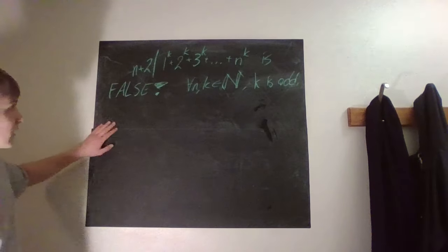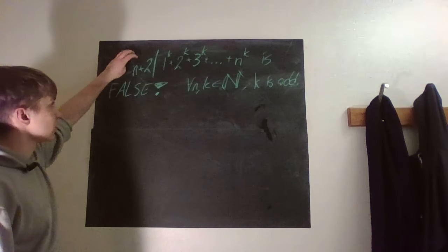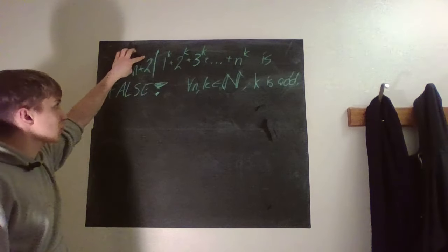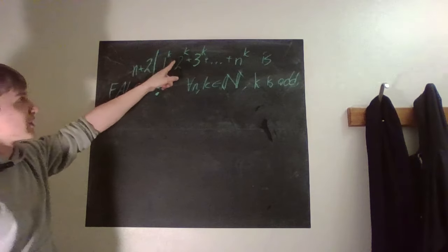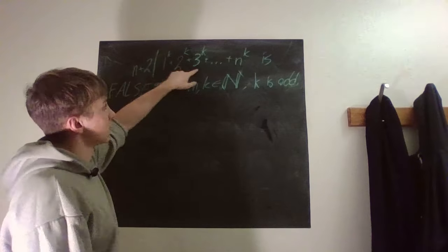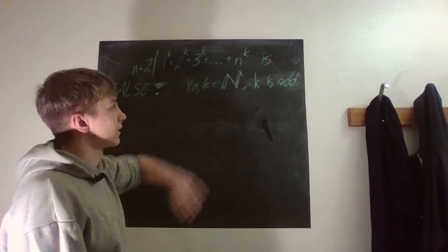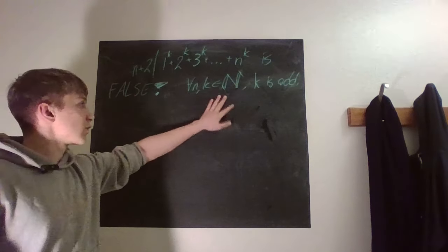So guys, here we got this bad boy right here. We're supposed to prove that 2 plus n plus 2 is never a divisor of 1 to the power of k plus 2 to the power of k plus all the way up to n to the power of k when n and k are natural numbers and k is odd.